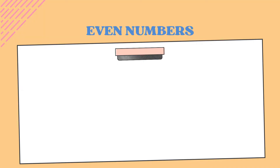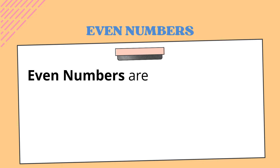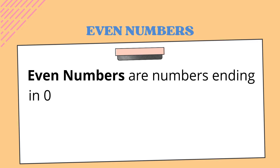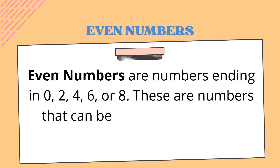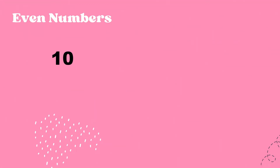First, we're going to study about even numbers. What are even numbers? Even numbers are numbers ending in zero, two, four, six, or eight. These are numbers that can be divided exactly by two. Look at this number — what number is this? Yes, you are right, it is ten. Ten is ending in what digit? Yes, it ends with zero.